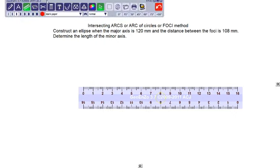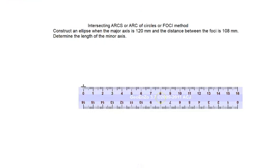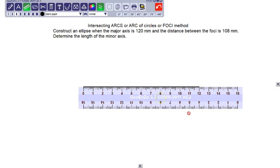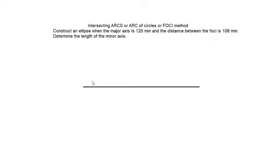Somewhere here I am taking a point. I will draw this distance of 120 mm with a black color. This distance is 120 mm. You can give some name here. Let us say this first point is A and the second point is B, so AB is the major axis that we have.